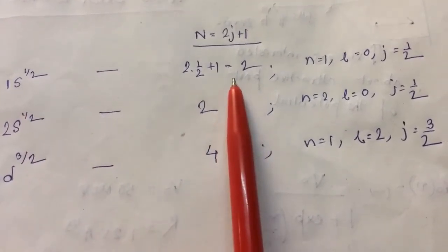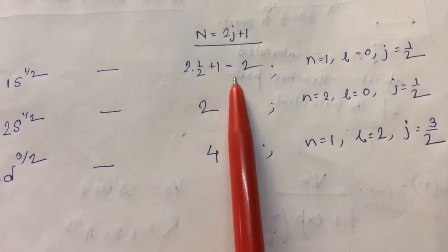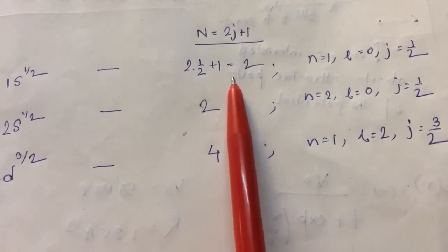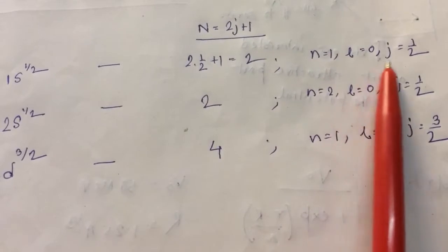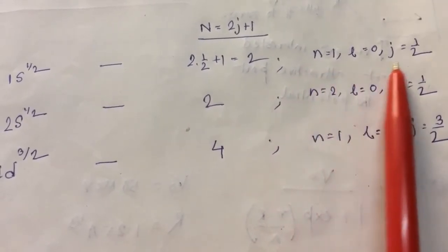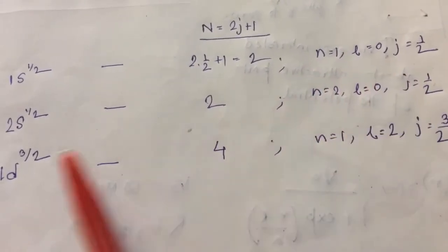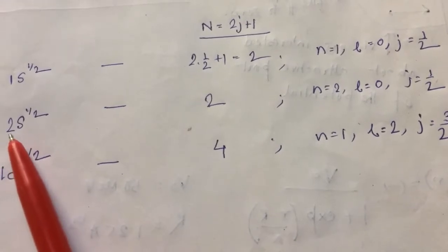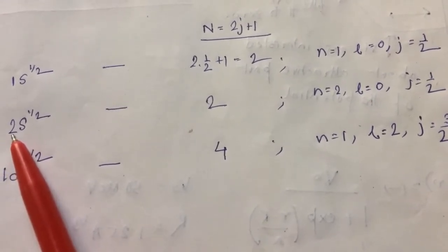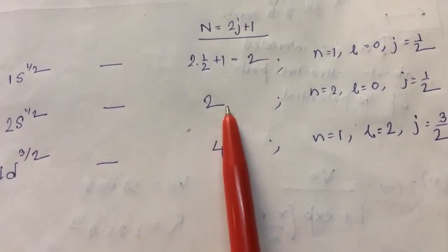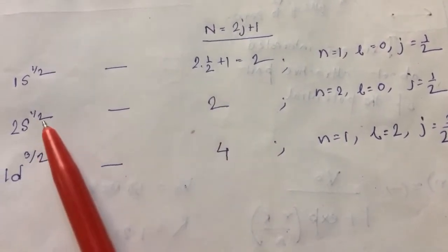The number of particles, that is the number of either nuclear neutrons or protons, is 2, and these are the quantum number values for this state. For 2s half, the principal quantum number equals 2. The number of neutrons or protons is 2J plus 1, where J is half.